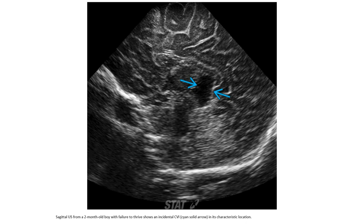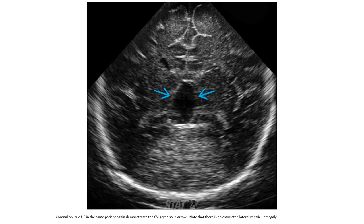This is the sagittal image from a two-month-old with a large CVI in its characteristic location. This is the coronal image for the same patient, again demonstrating the CVI. Note that there is no associated lateral ventriculomegaly.